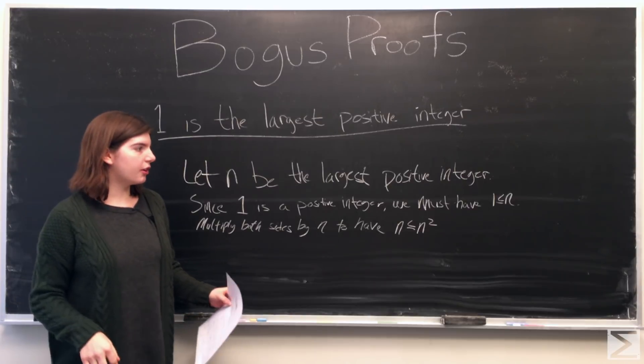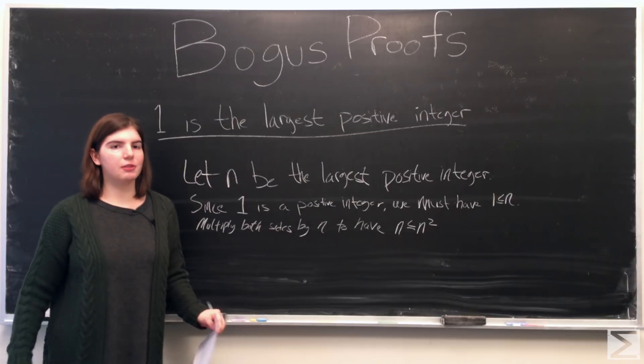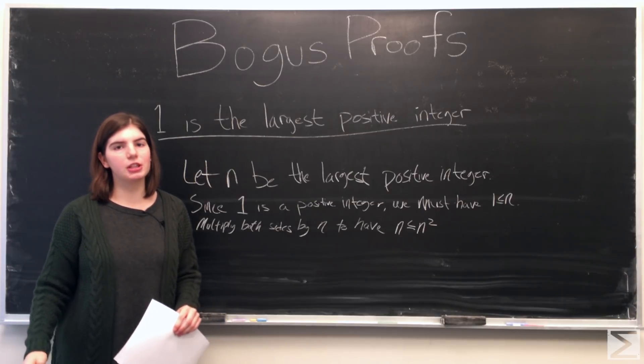And since n squared is a positive integer and we said that n is the largest positive integer, that means that n squared is less than or equal to n.